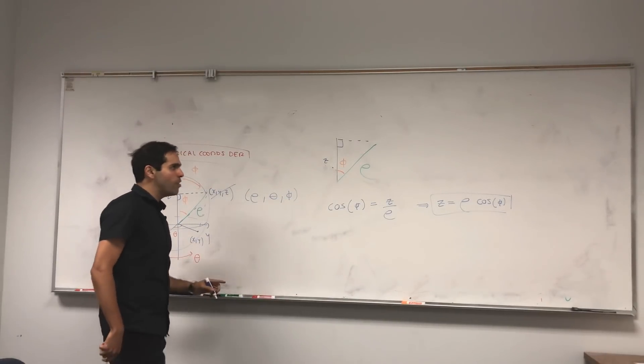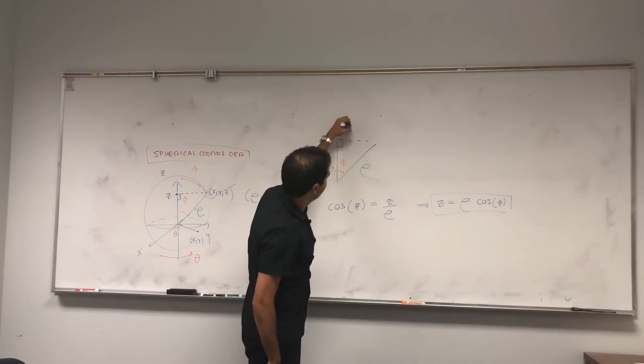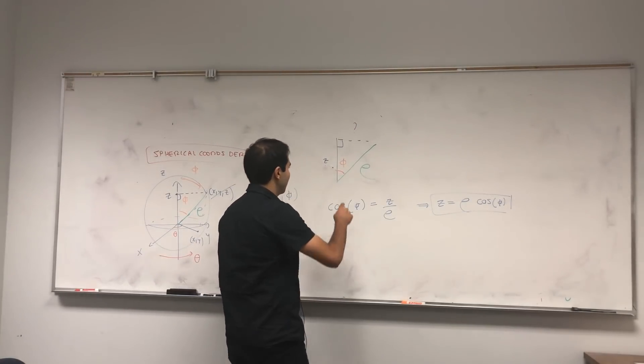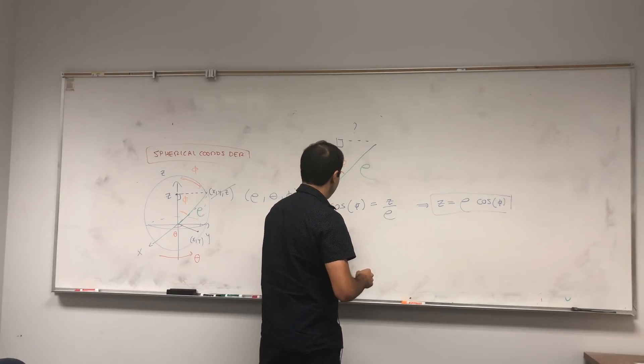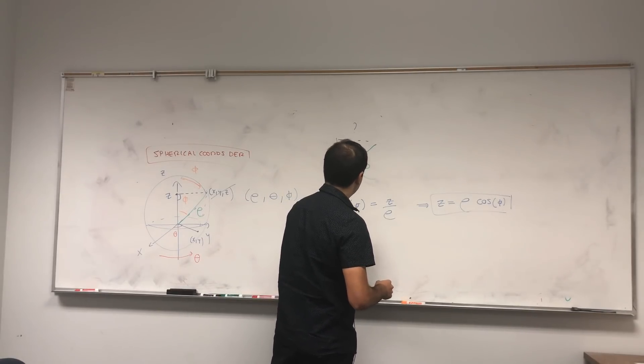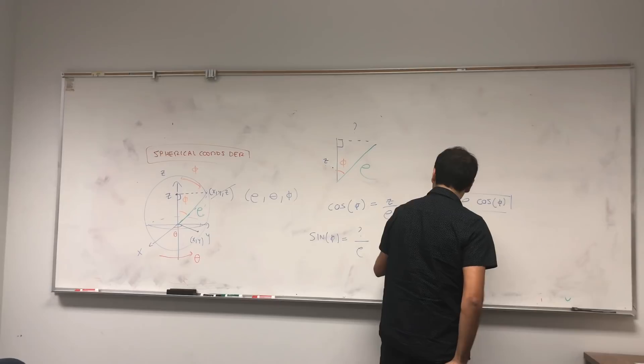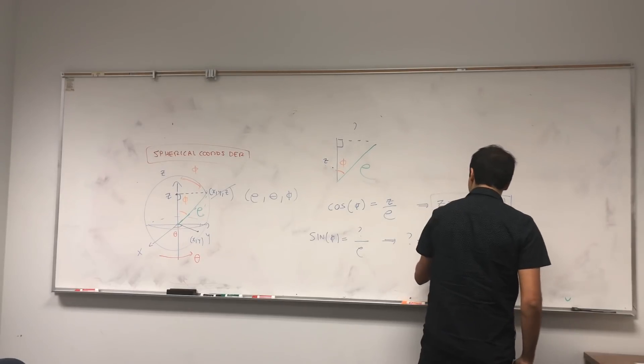And also, while we're at it, let's try to find this dotted thing, because it will be super useful in a second. So what we get is sine of phi equals question mark over rho. So question mark is rho sine of phi.